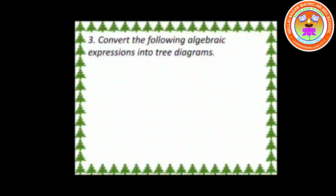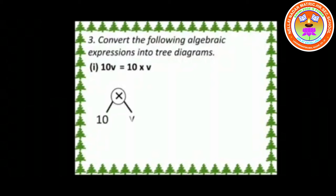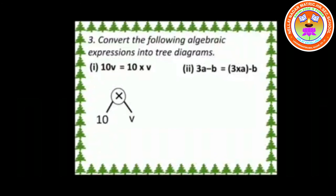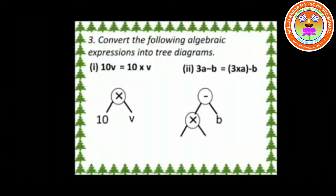Question 3: Convert the following algebraic expressions into tree diagrams. First one: 10V = 10 × V. Here the symbol × is the node, hence the leaves are 10 and V. Second one: 3A − B, written as 3 × A − B. The symbol minus is the node and its leaf is B. Then the symbol × is the branch and 3 and A are the leaves.